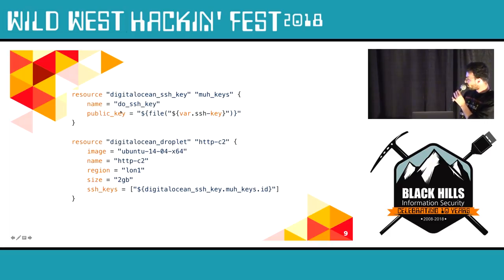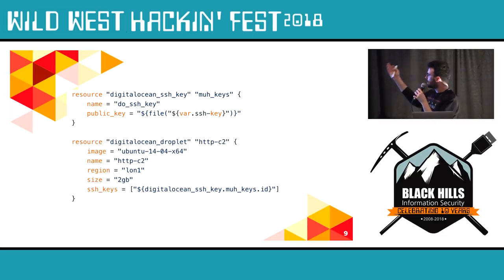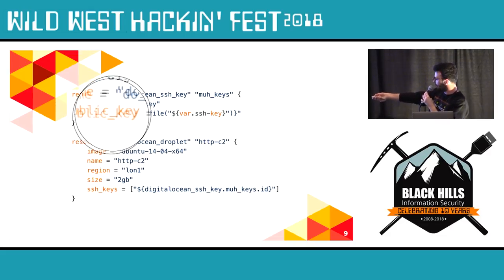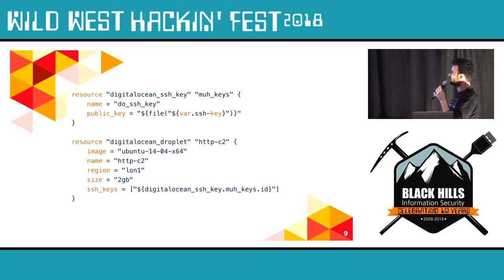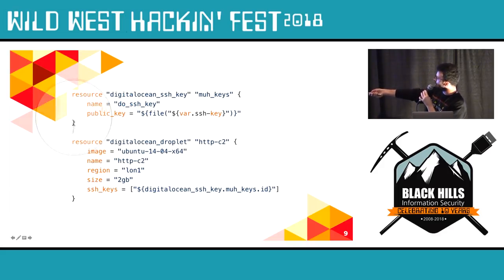Before all that, we define a DigitalOcean SSH key resource. You give it a file path and it will upload that SSH key to DigitalOcean so it's available to use. We're giving it the name digitalocean_ssh_key and using a built-in function called file. The file function takes a file path, reads it, and puts it into the public_key variable. The var.ssh_key variable is something we defined previously in our variables.tf file.